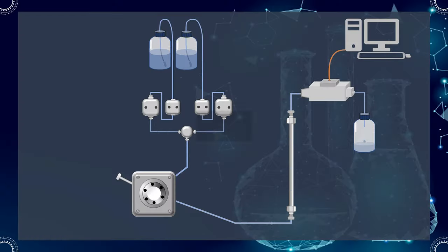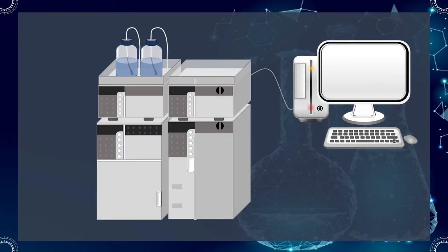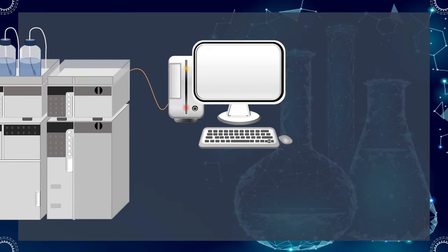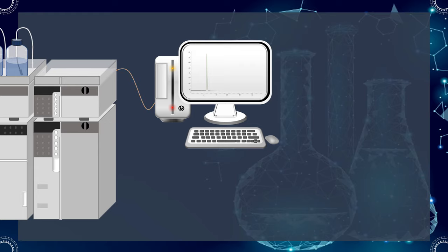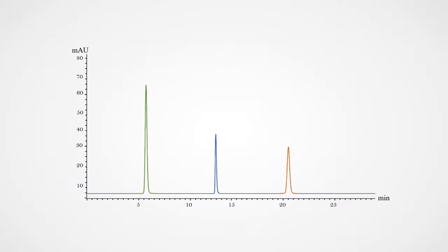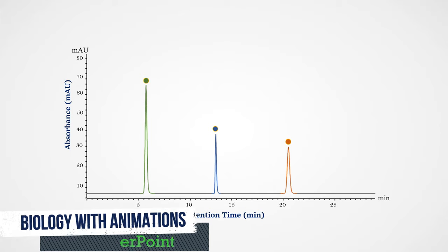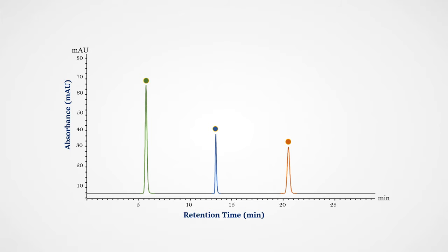The manner in which the final data is displayed is based on the computer and software. The number of peaks present can indicate how many components are in the mixture. Usually, the x-axis of the HPLC chromatogram shows the amount of time taken for the analytes to pass through the column and reach the detector. Typically, the y-axis, or the area of the peak, is a reflection of the amount of a specific analyte that's present.